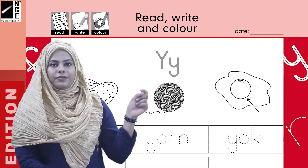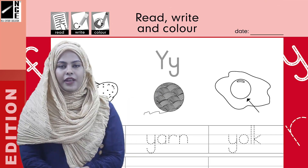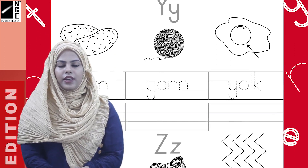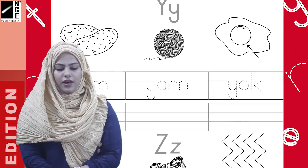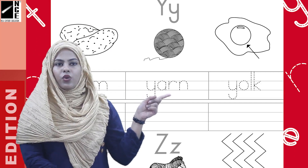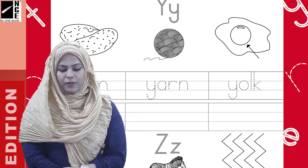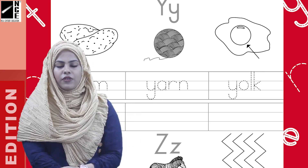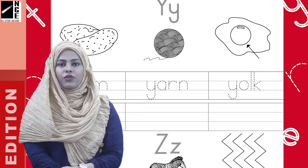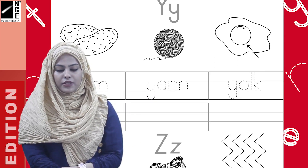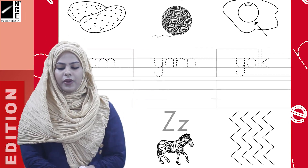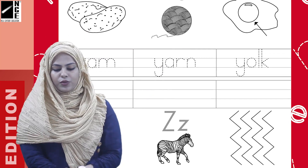Now move on to the next one, which is yarn. The spelling of yarn is Y-A-R-N. Yarn. Same as before, we will trace the word yarn here, and then write yarn in the given blank.